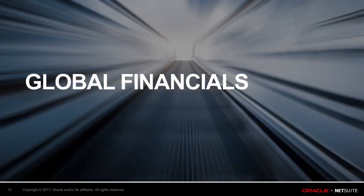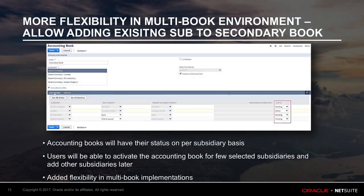As we continue to deliver more global financial capabilities, let me cover some of the highlights in the 18-1 release. With the 18-1 release, users can add an existing subsidiary with transactions to Active Secondary Book. This new feature will allow customers to have a different status for each accounting book-subsidiary combination.